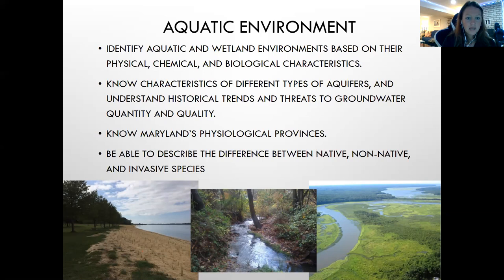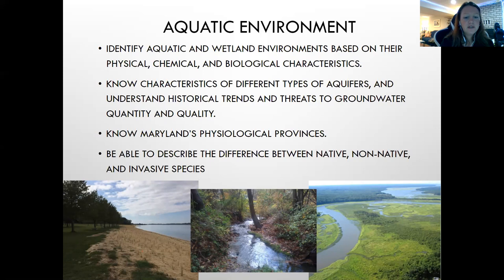There's more overlap here with native, non-native, and invasive species. The images below show a beachy coastline with grass planting, a basic stream flowing through Maryland, and an aerial shot of a marsh — Jug Bay on the Patuxent River. The light-colored grass there is wild rice; the darker colored grass is the invasive phragmites.